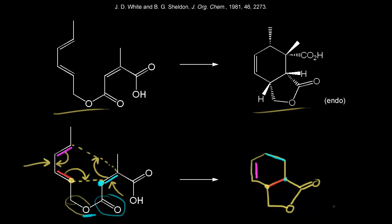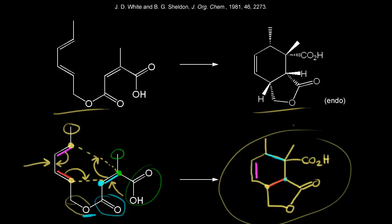So already we see those two rings. The next carbon is this one — I'll make it green — and we can see we have a methyl group and a carboxylic acid coming off of that carbon. I'll just draw these in without any stereochemistry. There's our methyl group, there is our carboxylic acid, CO2H. And then finally our last carbon — I'll make this yellow — this carbon has a methyl group coming off of it. So now we can see the formation of these two rings.